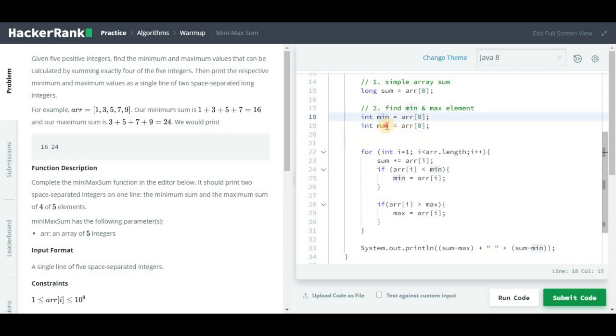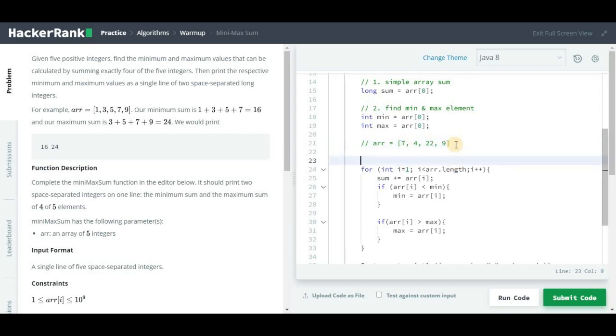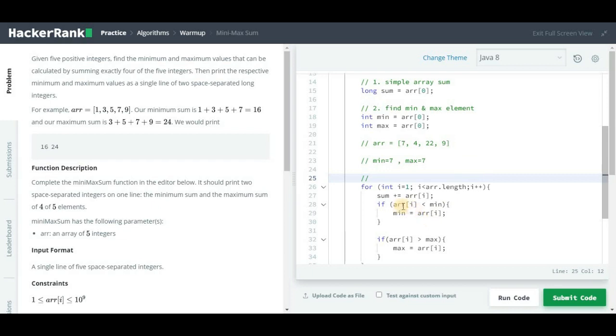Friends, you might be thinking why I have initialized min and max to arr[0]. Let's try to understand it using one example. Let's say the array is 7, 4, 22, and 9 as the elements, and initially our min will be 7 and similarly our max will be 7. Now in the first iteration, arr[i] which is 4, so is 4 less than 7? It is true, so our min will be updated from 7 to 4.